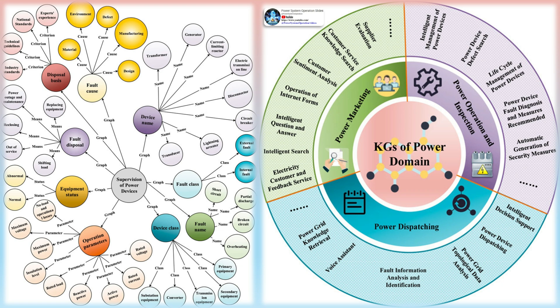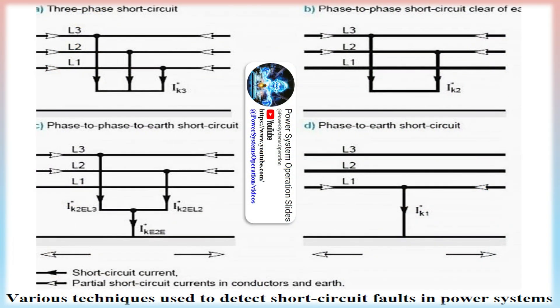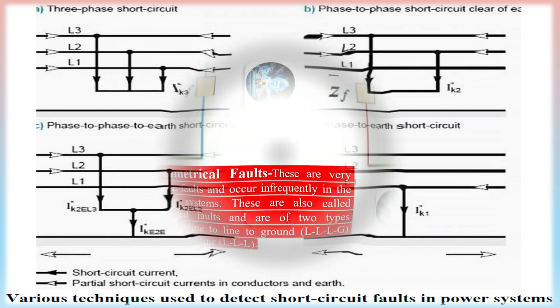Types of short-circuit faults include phase-to-ground faults, where a single-phase conductor makes contact with the ground or an object in contact with the ground. In this type of fault, the voltage between the faulted phase and ground becomes zero, resulting in a sudden increase in current flow. Phase-to-phase faults occur where two or more phase conductors come into contact with each other, resulting in a direct path for current flow between the phases and can cause significant damage to equipment.